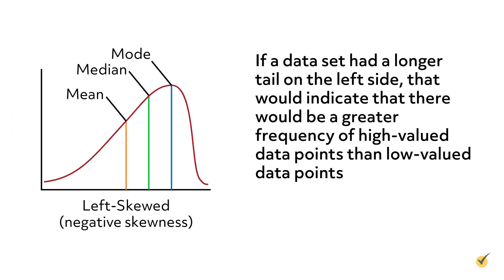Similarly, if a dataset had a longer tail on the left side, that would indicate that there would be a greater frequency of high value data points than low value data points. The mean would then be lower than the median in a left skewed distribution.